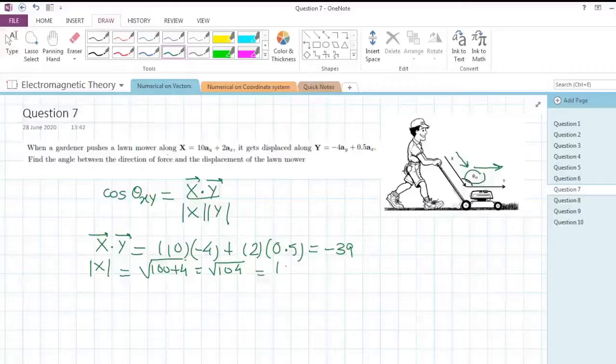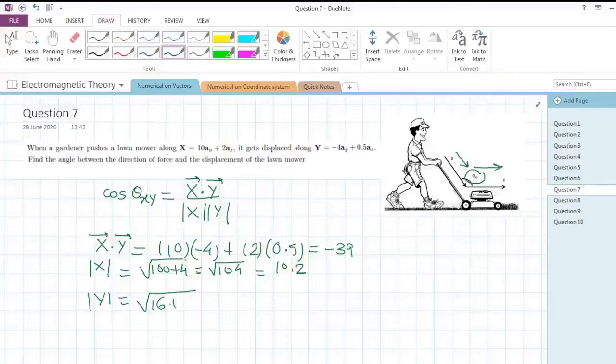The magnitude of y: 4 squared is 16 plus 0.5 squared which is 0.25, so it will be the root of 16.25, and the answer will be 4.03.